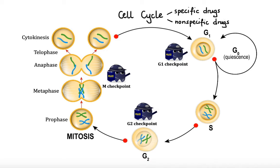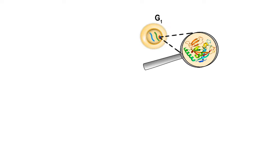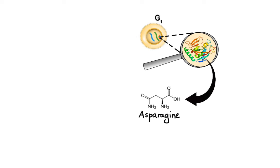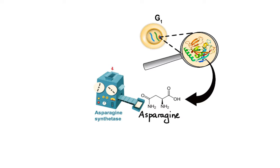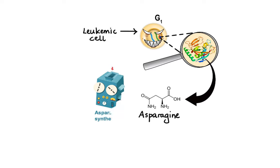Now let's explore these drugs in more detail, starting with the ones acting in G1 phase. During this phase, the cell synthesizes the majority of proteins needed later for DNA replication and cell division. One of the building blocks of many of those proteins is an amino acid called asparagine. Healthy non-malignant cells can synthesize asparagine with the help of the enzyme asparagine synthase. However, some tumor cells, such as leukemic cells, lack this enzyme and depend on an exogenous supply of asparagine for their survival.